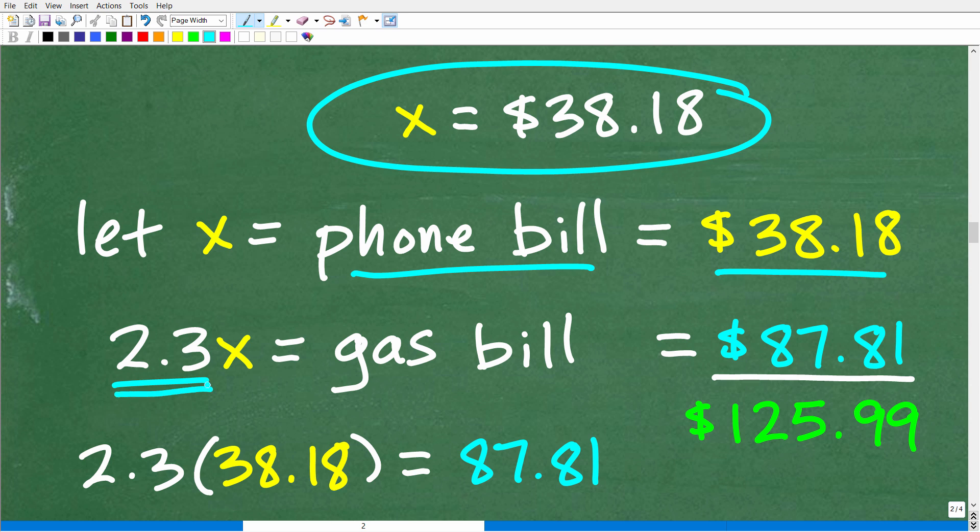Now her gas bill is going to be 2.3 times that amount. So 2.3 times 38.18 is approximately 87.81. Okay, so this is her gas bill. And let's just kind of add these two together and see if we get pretty close to $126. So 38.18 plus 87.81 is 125.99. That's pretty close to $126.